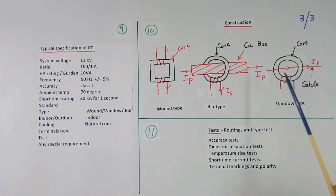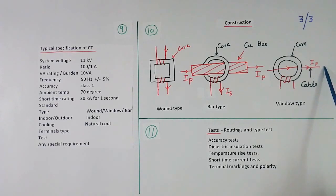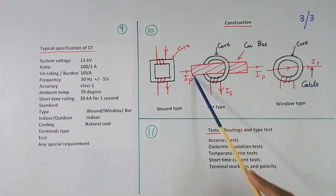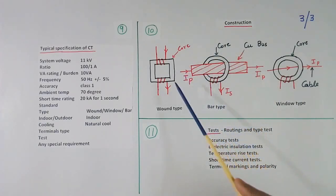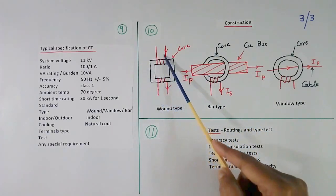In window type, these are same. Only difference is here one bar will be there. Here there will not be any bar. The cable itself will come and go. These are used for high voltage, high current application. This is used for low voltage, low current application.